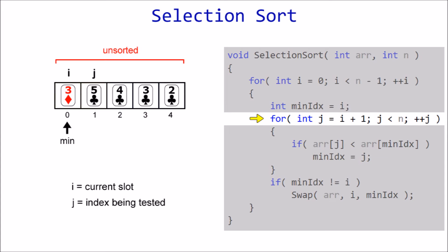Next we step into the inner loop, where J represents the index being tested for the minimum element. J starts at index I plus one, which is one, so we ask the question, is five less than our current minimum three? No, so J is incremented to index two. Is four less than three? No, so increment J to index three. Is three less than three? Once again, the answer is no, so we increment J to index four.